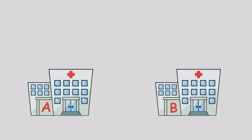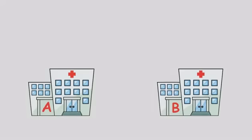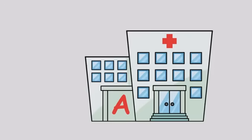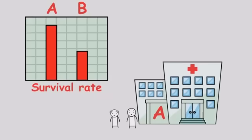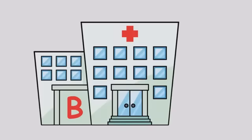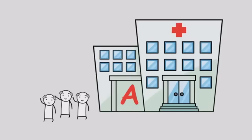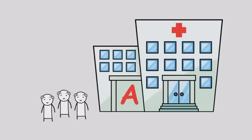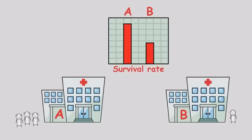Simpson's paradox. Imagine two hospitals, A and B. Hospital A is very good at treating both young and elderly patients, so its survival rates are higher than Hospital B for each age group individually. But Hospital B mostly treats young patients, who naturally have a higher chance of surviving, while Hospital A mostly treats older patients, who are at higher risk. When you look at the overall survival rate, Hospital B might actually appear to do better, even though Hospital A is better for every age group.